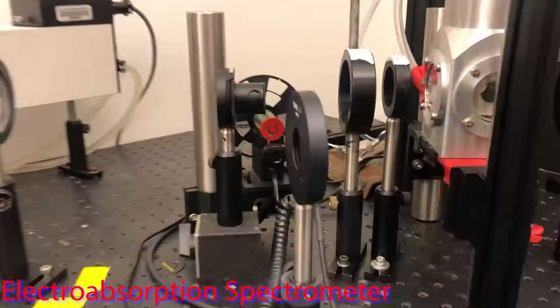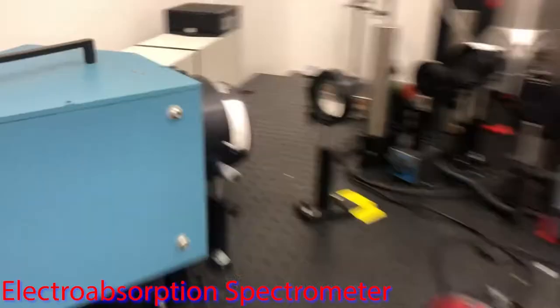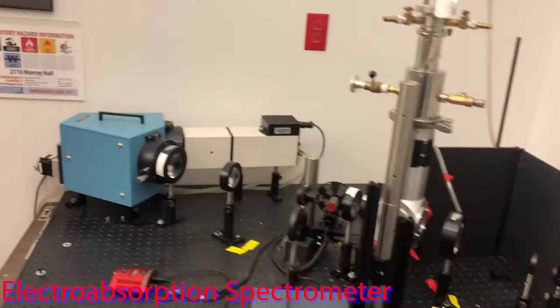This here is a fairly custom spectroscopy apparatus. This electroabsorption spectrometer allows us to measure changes in a molecule's absorption spectrum in an applied electric field. This allows us to determine fundamental values such as the change in dipole or change in polarizability associated with an electronic transition.